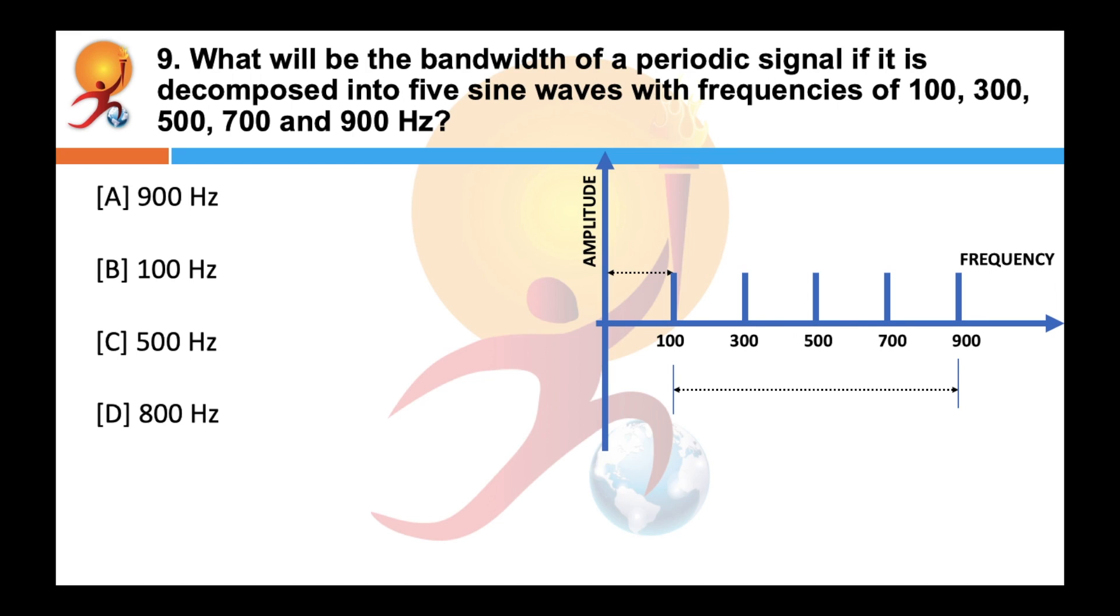What will be the bandwidth of a periodic signal if it is decomposed into five sine waves with frequencies of 100, 300, 500, 700, and 900? The answer is 800.